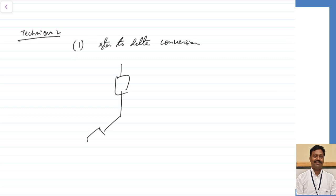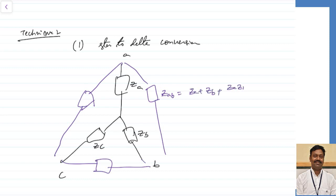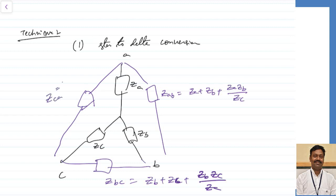In a star connection with impedances ZA, ZB and ZC at terminals A, B and C, we can convert to an equivalent delta connection. The delta impedances are: ZAB = ZA + ZB + (ZA×ZB)/ZC, ZBC = ZB + ZC + (ZB×ZC)/ZA, and ZCA = ZC + ZA + (ZC×ZA)/ZB. This is the same as what you have studied in networks.